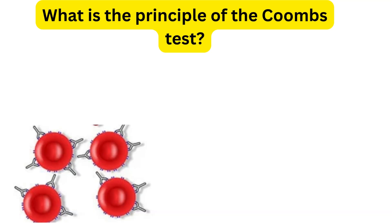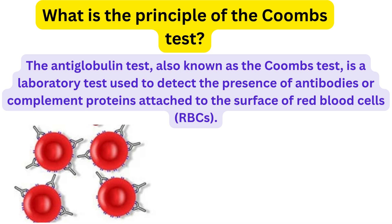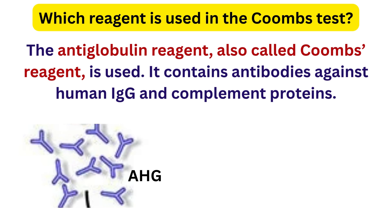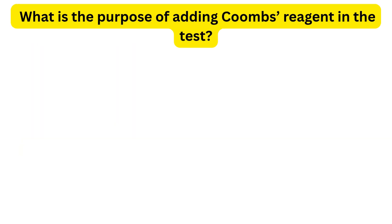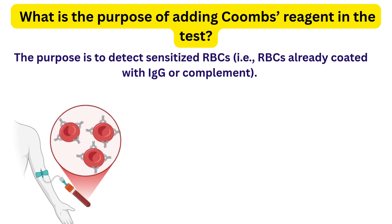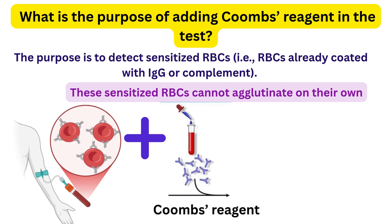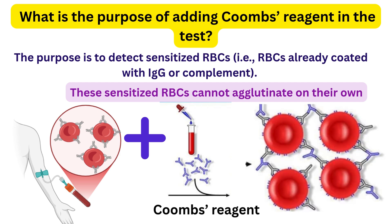Next question: what is the principle of the Coombs test? Also called the anti-globulin test, it detects antibodies or complement proteins already attached to the surface of RBCs. The reagent used is Coombs reagent, also called anti-globulin reagent, which contains antibodies against human IgG and complement proteins. Its purpose is to detect sensitized RBCs — those coated with IgG or complement — which don't clump on their own. Adding Coombs reagent bridges these coated RBCs, causing visible agglutination, indicating a positive result.